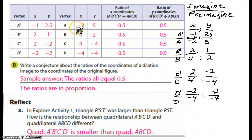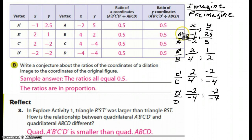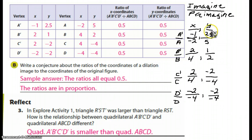For your original points: A — x is negative two, y is five. For B — x is four, y is two. For C — x is four, y is negative four. And for D — x is negative four, y is negative four. Setting them up as ratios: for A prime over A, x is negative one divided by negative two, and y is 2.5 divided by five. When simplified, both give one-half, or in decimal form, 0.5.